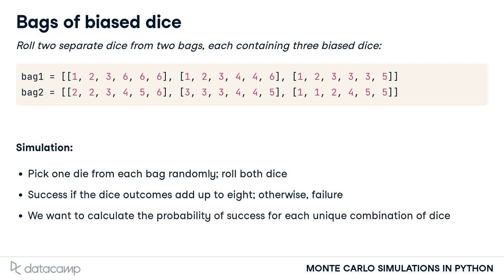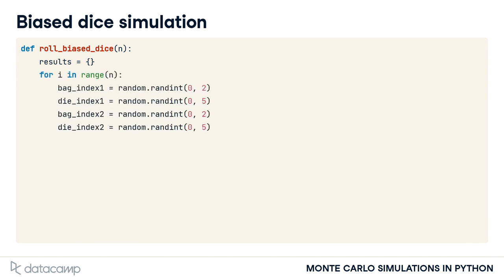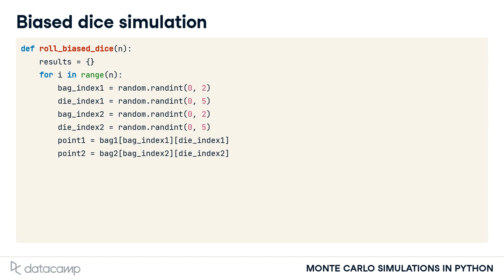We can use a Monte Carlo simulation to calculate the probability of success for each unique combination of dice. We start with a function called roll-biased dice, which accepts n number of trials as an argument. The results dictionary records simulation results. For each trial, we generate four random numbers: bag index 1 for picking a random die from bag 1, and die index 1 for sampling a random side of that die. We similarly define bag index 2 and die index 2 to get a random side of a die in bag 2.